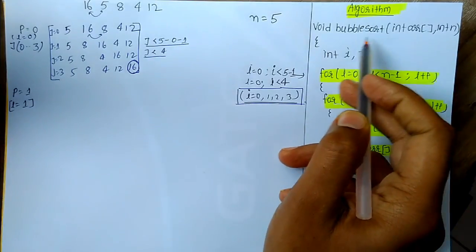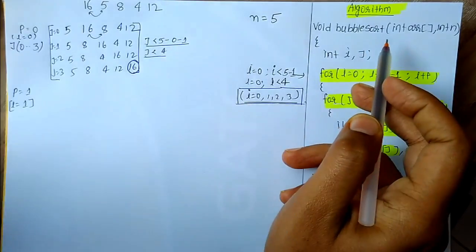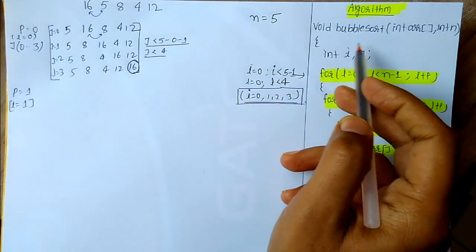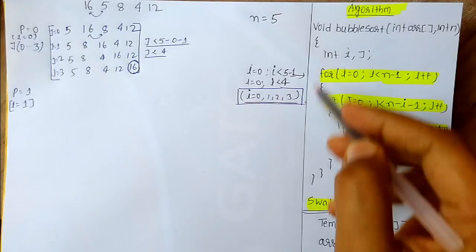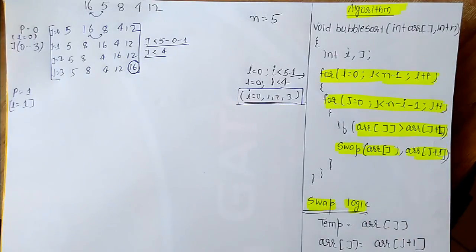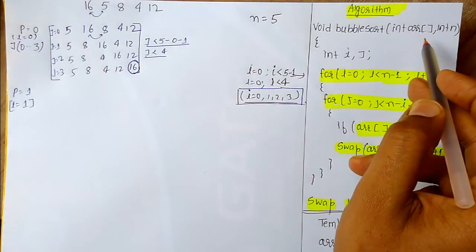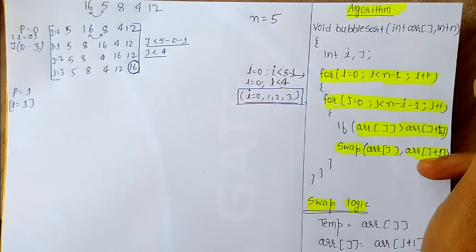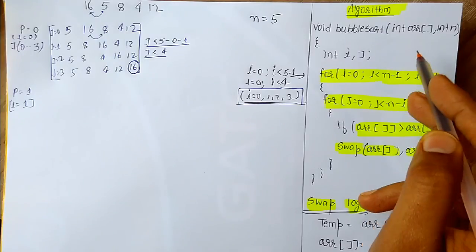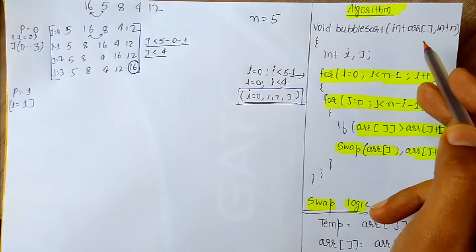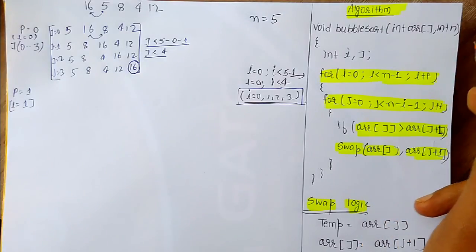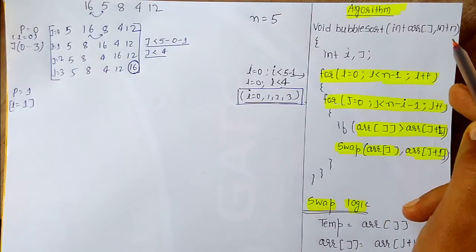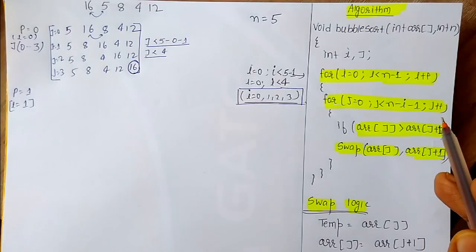This is the function bubble sort and in this function we will do all the operations. All the algorithm is written here, and into this parameter, array and n is passed — where array is the unsorted array we have to sort, and n is the number of elements in the array.